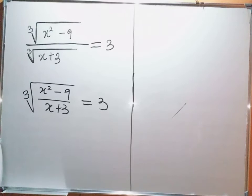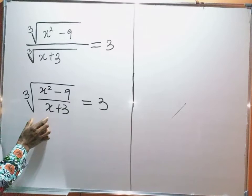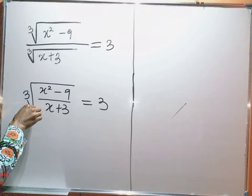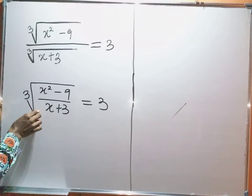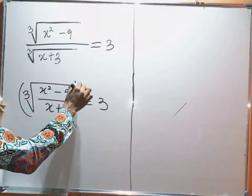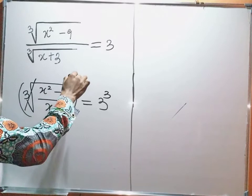So at this point, this is a cube root on the left-hand side. For me to be able to eliminate this cube root, you know that the opposite of cube root is power of 3. So I can raise the left-hand side to the power of 3, and raise the right-hand side to the power of 3, so that the cube root cancels out.